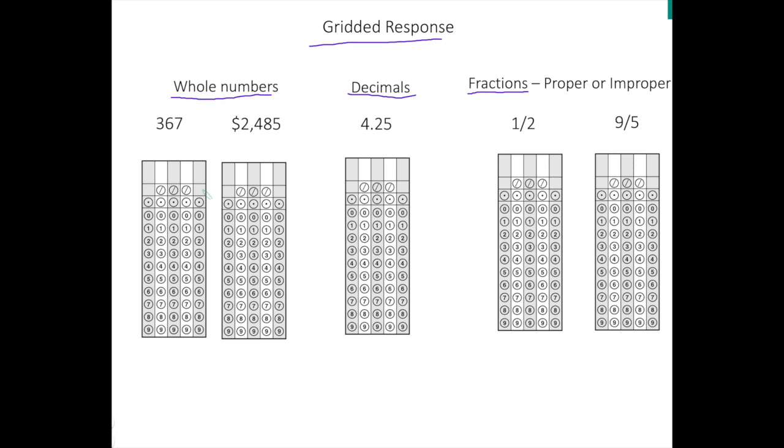Now suppose you're on the TASS test and you work out your word problem and your answer is 367. How would you input that into the grid? Your first step is to write your answer in the first row. Now you can either write your answer starting from the left or starting from the right. I'm going to start from the left. So I'm going to write my answer which is 367.